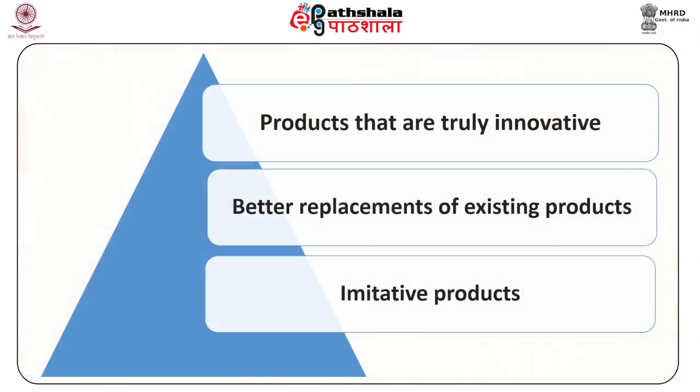What is a new product? The term 'new product' can be slightly misleading as there are numerous connotations of newness. It can range from new-to-the-world products that create an entirely new market at one end, to minor improvements in existing products at the other. How new a product is affects how it should be marketed. The three major categories of new products are: first, products that are truly innovative — any new product that satisfies a real need of a market that is not being satisfied at the time it is introduced.